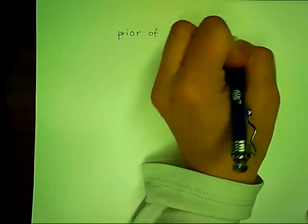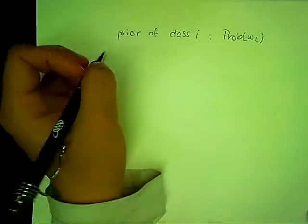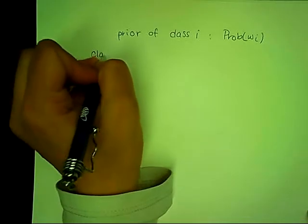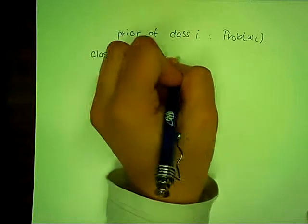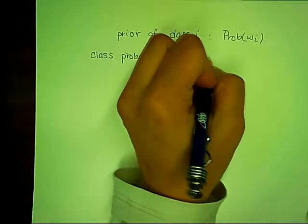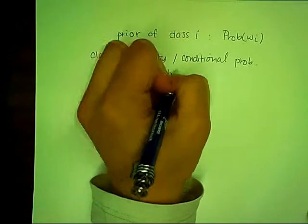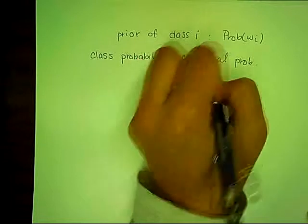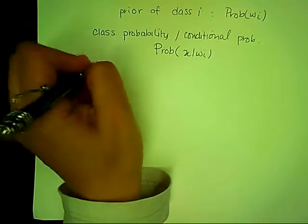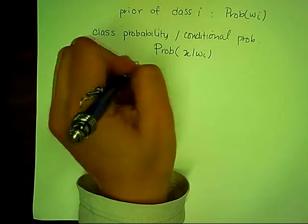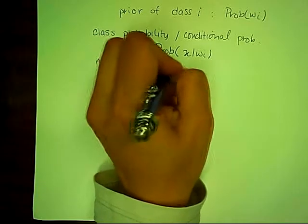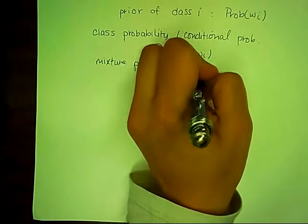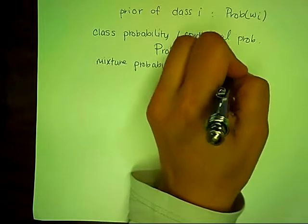The prior of class I is defined as the probability of W_I. Then there is the class conditional probability, also called the conditional probability, which is defined as the probability of X given W_I. And then the mixture probability of the data set, also defined as the probability of X given W_I.